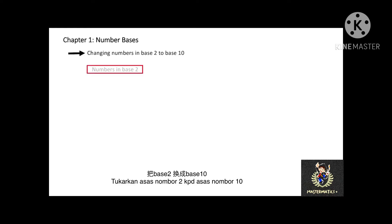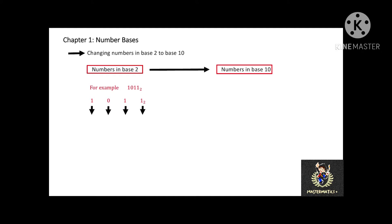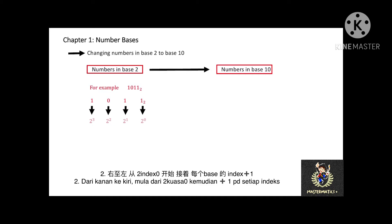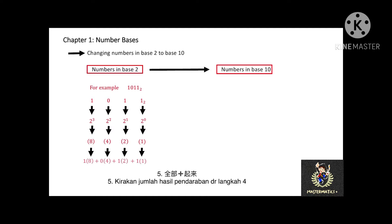Now we will learn changing numbers in base 2 to base 10. For example, 1011 in base 2, converted to base 10. First, we list out the base 2 number 1011. Then from right to left, we list down the index notation starting with 2 to the power of 0, adding 1 to the subsequent index up to 2 to the power of 3. We then calculate the index notation values, multiply each base digit by its index notation value, and sum up to get the base 10 number, which equals 11.